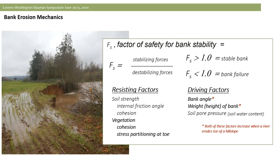The driving factors are bank angle — the more vertical the bank, the more unstable it is — and the height of that bank. You also have pore pressures, particularly soil water pore pressures in the bank, which can be a destabilizing factor. Vegetation can help counteract some of that pore pressure under saturated soil conditions.